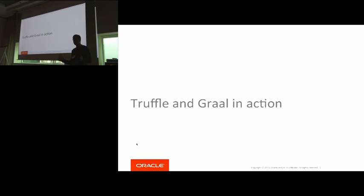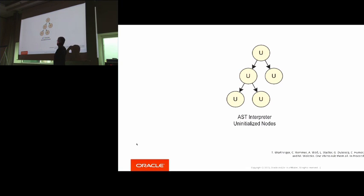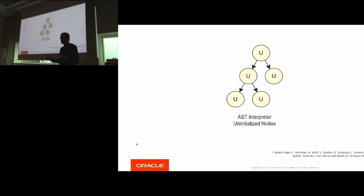Now let me tell you more about what Truffle and Graal actually do. As a programming language implementer, you're responsible for creating language interpreters. An AST interpreter is a representation of a program consisting of nodes that represent the semantics of operations in the language. The AST interpreter executes the program by walking the AST tree and executing the operators. It's fairly simple, but if left by itself without any support for JIT compilation, it is typically rather slow.